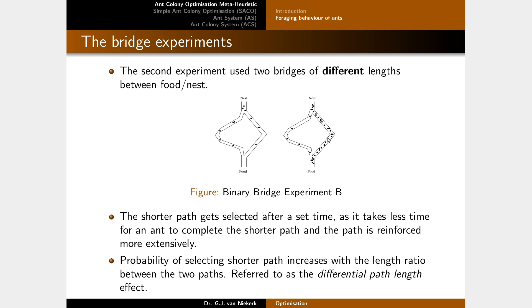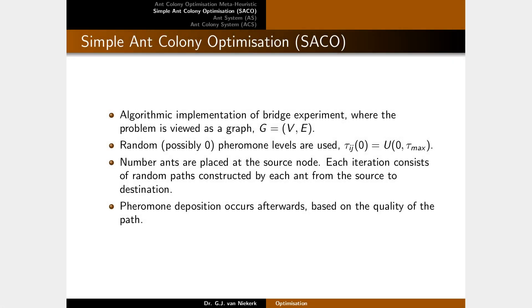If for some reason a path becomes more difficult to traverse — maybe a rock gets placed in between — the ants will eventually start converging on the other path again. So this behavior also has a dynamic, self-adapting effect. One of the very first algorithms based on this is the simple ant colony optimization algorithm, or SACO.